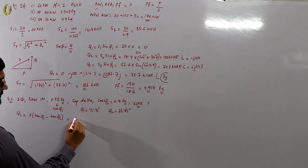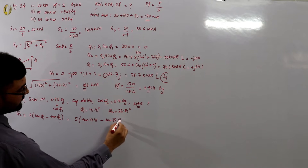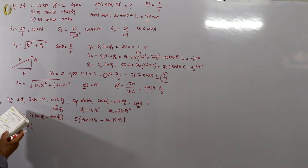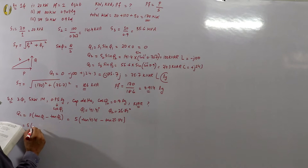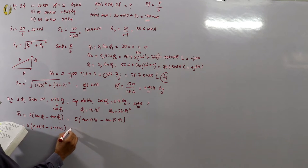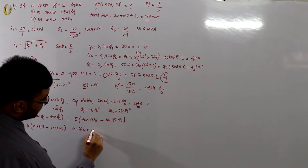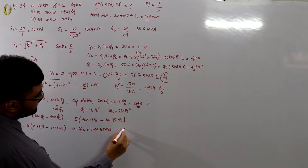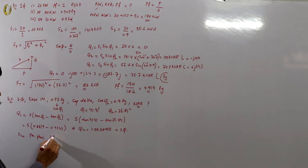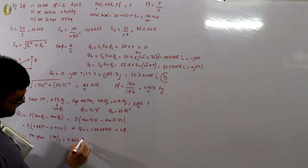Using the formula Qc = P × (tan φ₁ − tan φ₂): Qc = 5 × (tan 41.41° − tan 25.84°) = 5 × (0.8819 − 0.4843) = 1.99 KVAR. Since this is a 3-phase system, the per-phase value is 1.99/3 = 0.663 KVAR per phase.